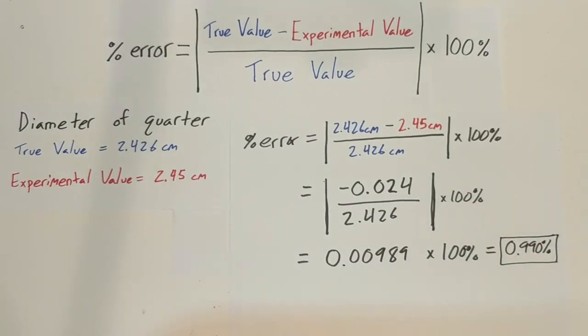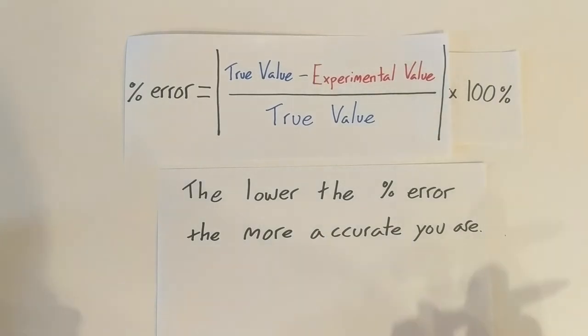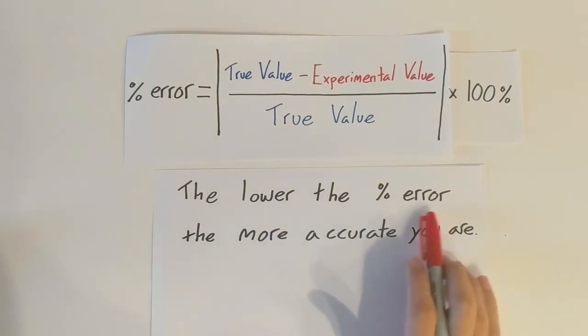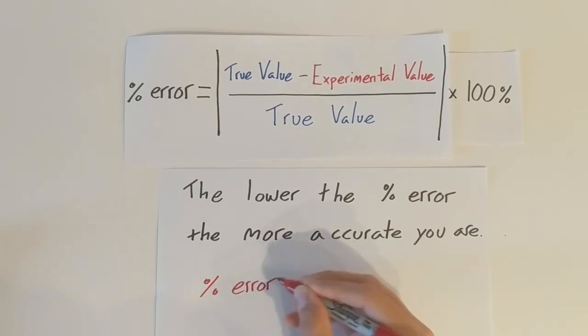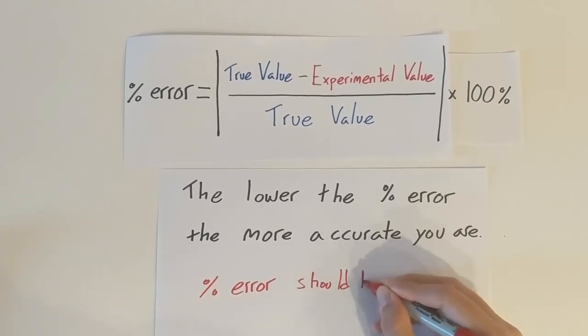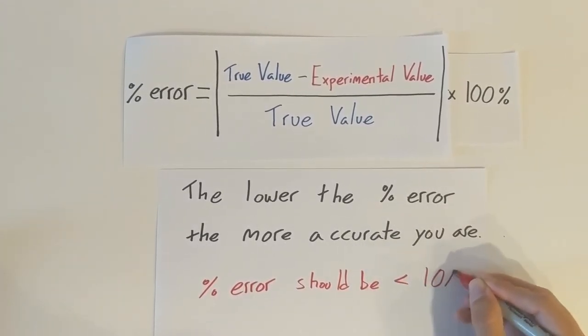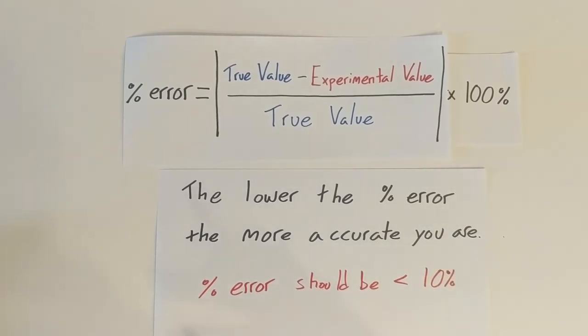So pretty close. So one last thing about percent error is that the lower the percent error, the more accurate you are. So given the tools that we use in our class, your percent error should be less than 10 percent. So anything under 10 percent is going to be a pretty accurate measurement in this class. If you're hitting over 10 percent in your percent error, you want to start questioning how you're measuring and try to be a little bit more careful.